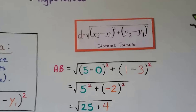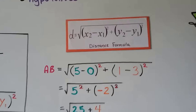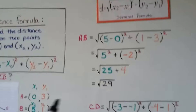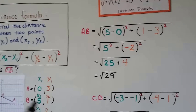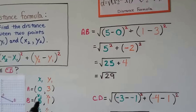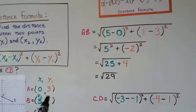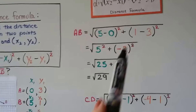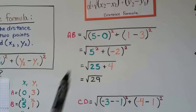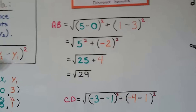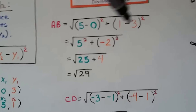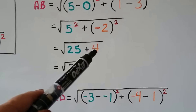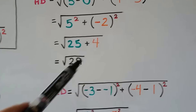Using the distance formula for segment AB — the entire expression is under a radical sign with squared terms: (x₂ - x₁)² + (y₂ - y₁)². So we get (5 - 0)² + (1 - 3)² = 5² + (-2)² = 25 + 4 = √29.